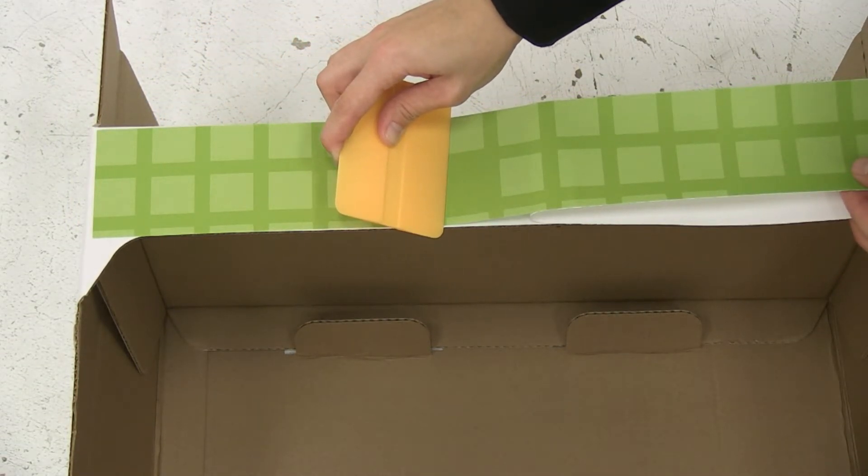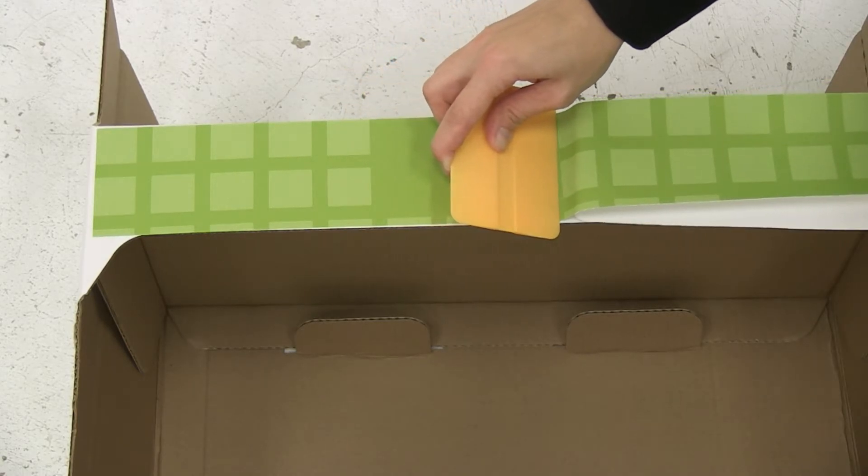As you move your squeegee down to the graphic, you want to pull the backer off at the same time.